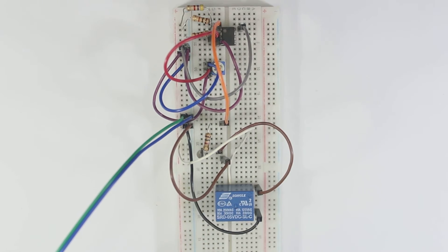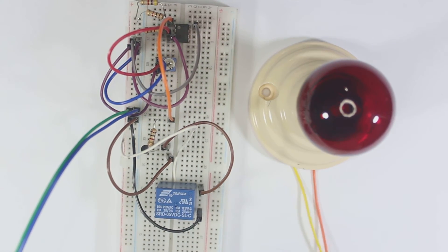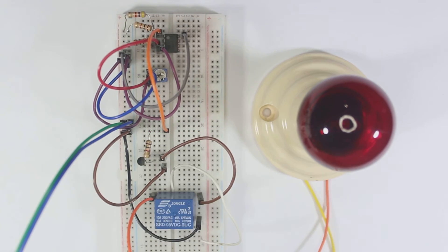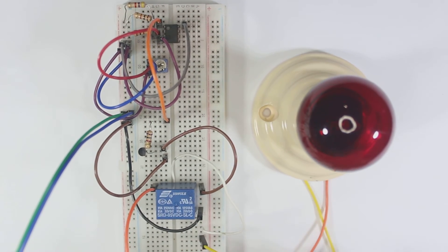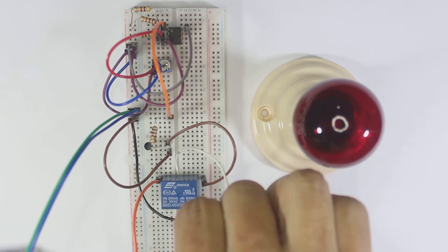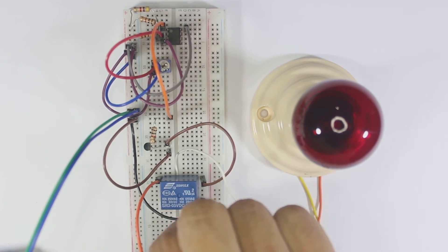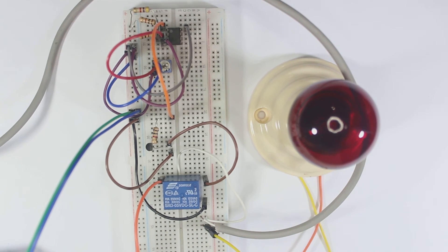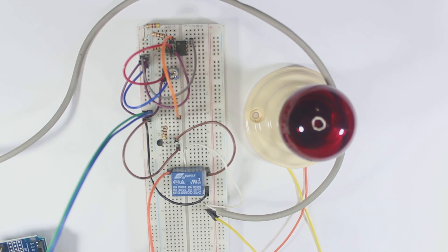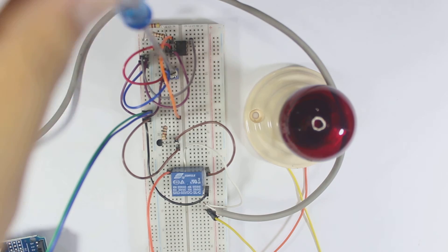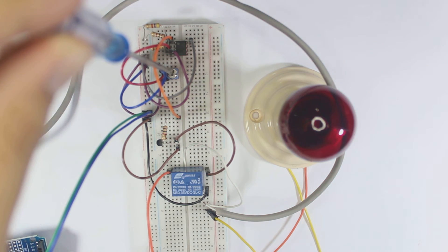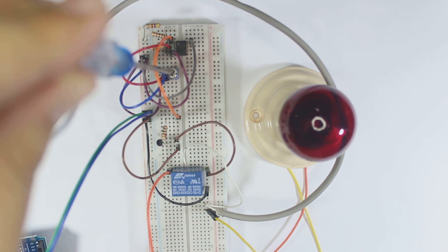To make it more satisfying, we can change the load to an AC load — I'll use an AC lamp. But be careful: AC is deadly, you can get electrocuted, so make sure you understand what you are doing and never touch the AC area. Now I will test this circuit — and it's working. Whenever I adjust the voltage input, it can control the AC lamp.